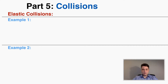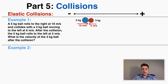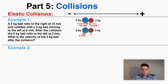Starting with two examples from elastic collisions, with right as positive and left as negative: a five kilogram ball rolls to the right at 10 meters per second and collides with a three kilogram ball moving to the left at six meters per second. After the collision the five kilogram ball rolls to the left at two meters per second. What is the velocity of the three kilogram ball after the collision? The first step is finding the total momentum in the system, because that remains the same before and after.